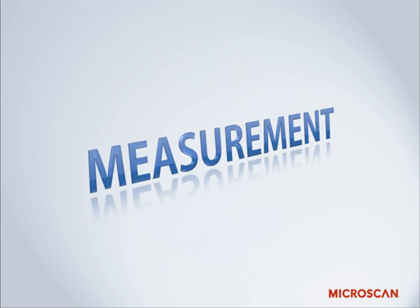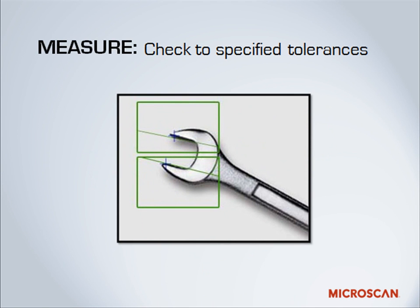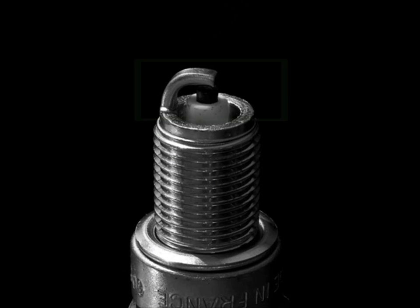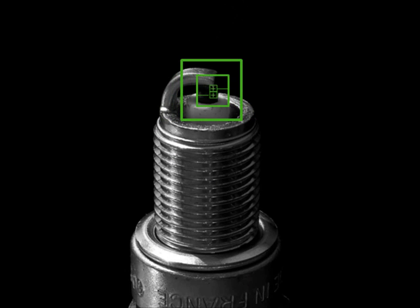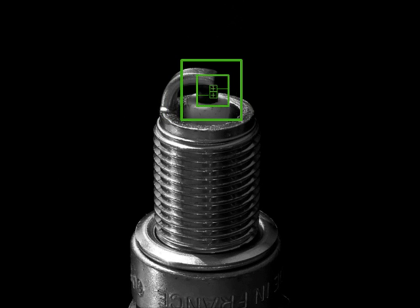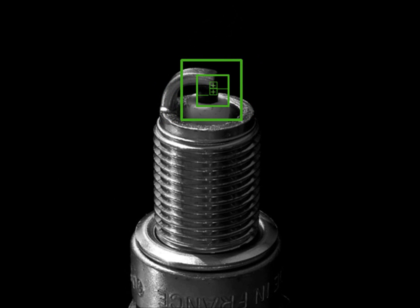Since its start, machine vision has been widely used for measurement — the automated measurement by a machine. That measurement can then be checked to a specified tolerance. For example, something we've been doing for years with machine vision is measuring the gap in spark plugs. This gap needs to be a certain width or the car won't run as well, making it an extremely critical spec. We can use a camera to measure the spark plug gap by machine, eliminating the need for a person to measure and adjust the gap manually.